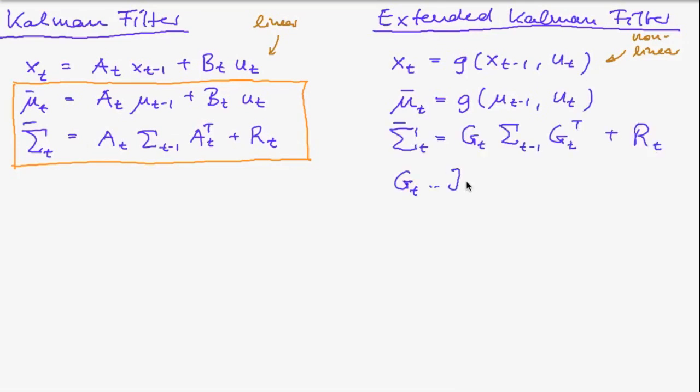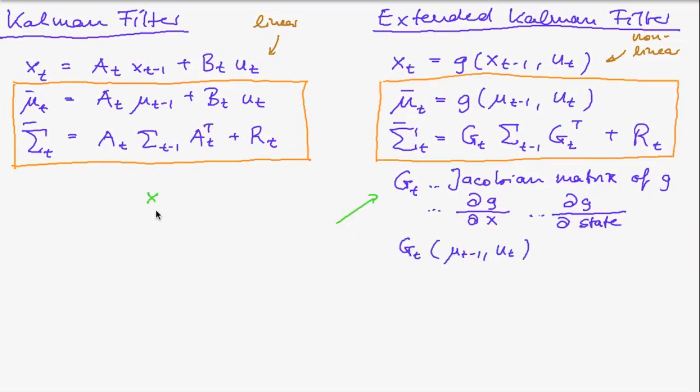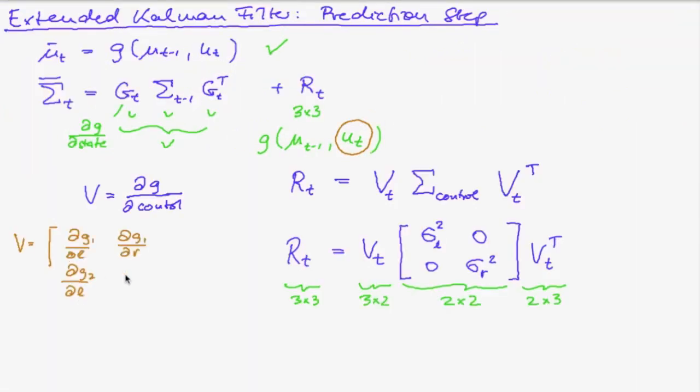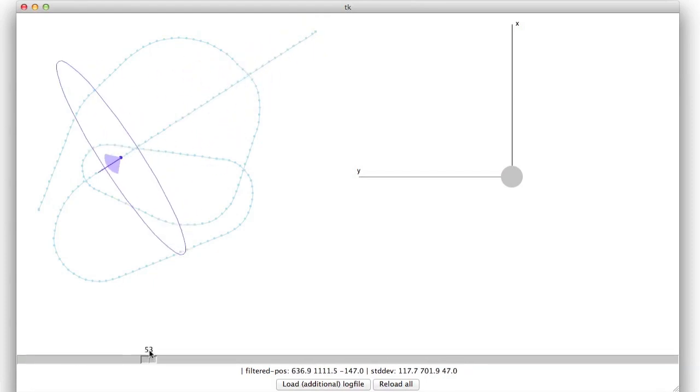In order to use the Kalman filter we need to compute the derivatives of the motion equation with respect to the state and we also need the derivatives with respect to control. After we compute all of this we obtain the robot's trajectory based only on the prediction step and we see that the error in position and heading grows unboundedly.